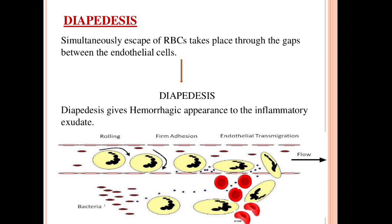Diapedesis is the simultaneous escape of RBCs through the gaps between endothelial cells. When RBCs escape out of the blood vessels through this process, it is referred to as diapedesis, and it results in hemorrhage — internal bleeding at the site of inflammation.